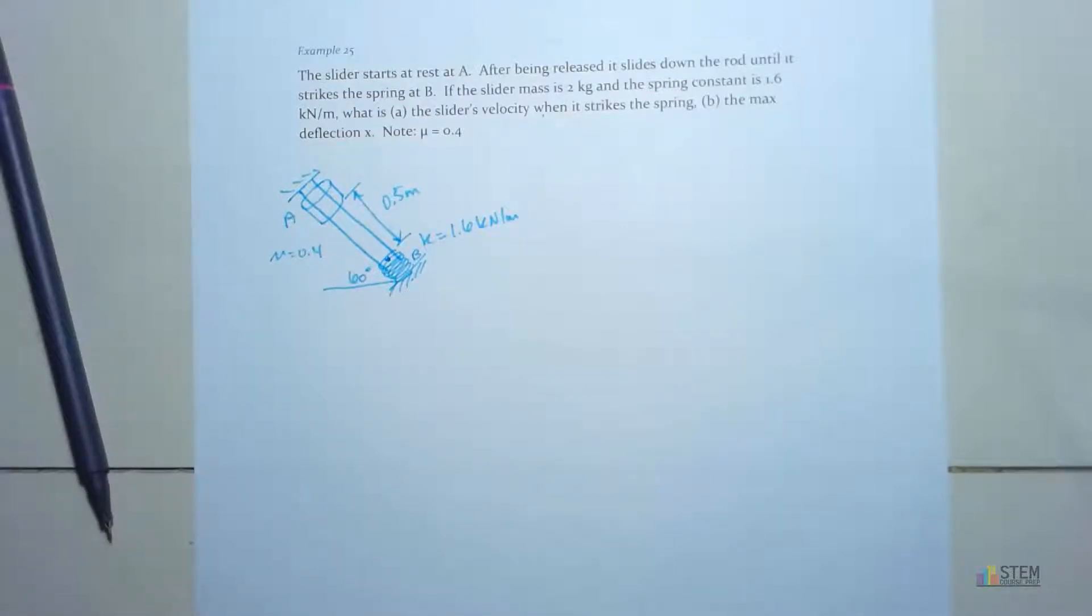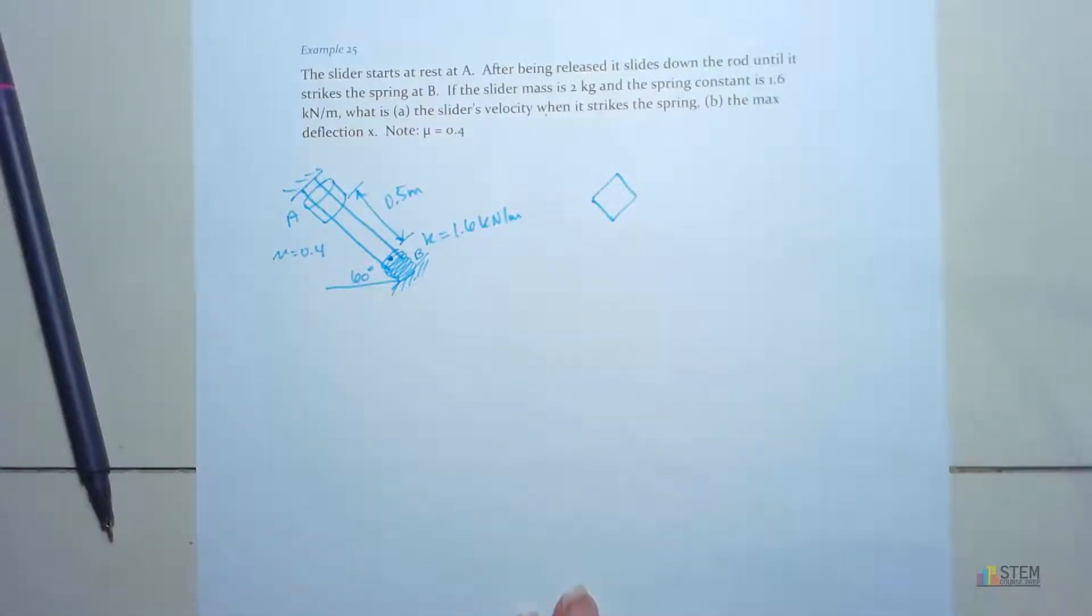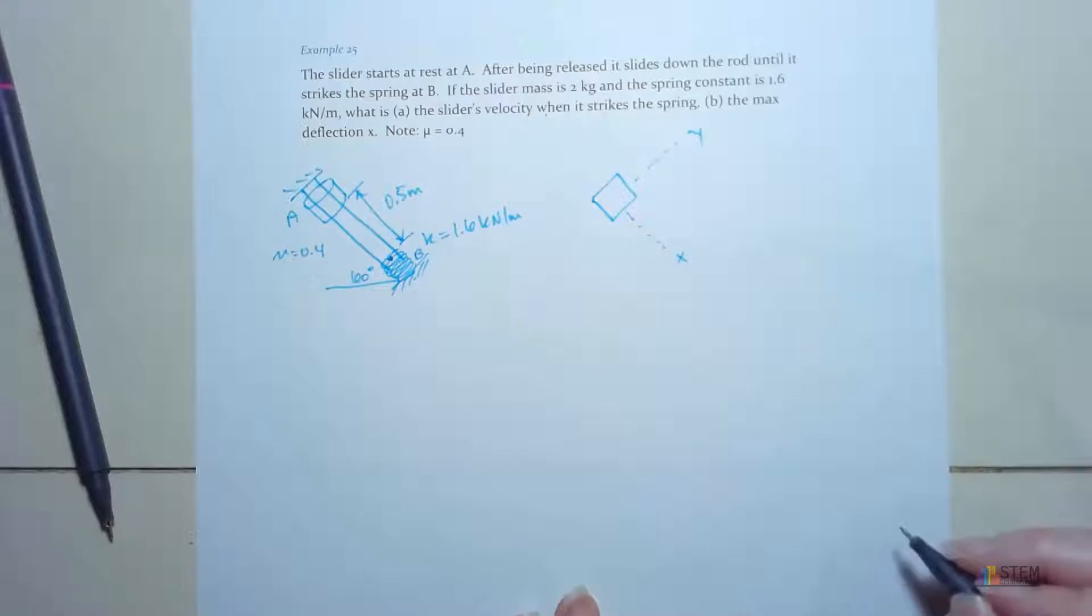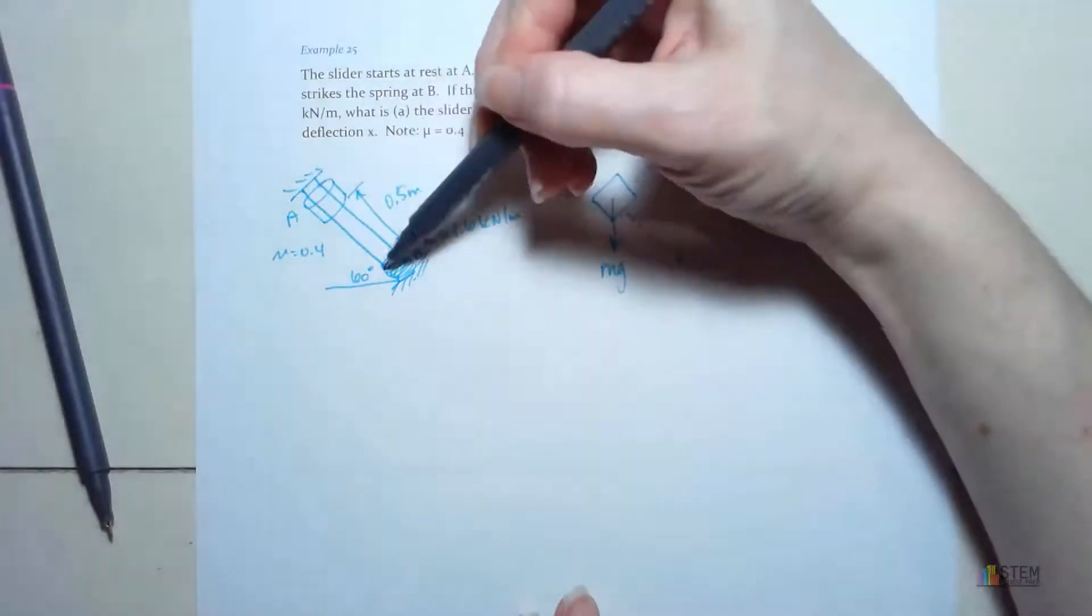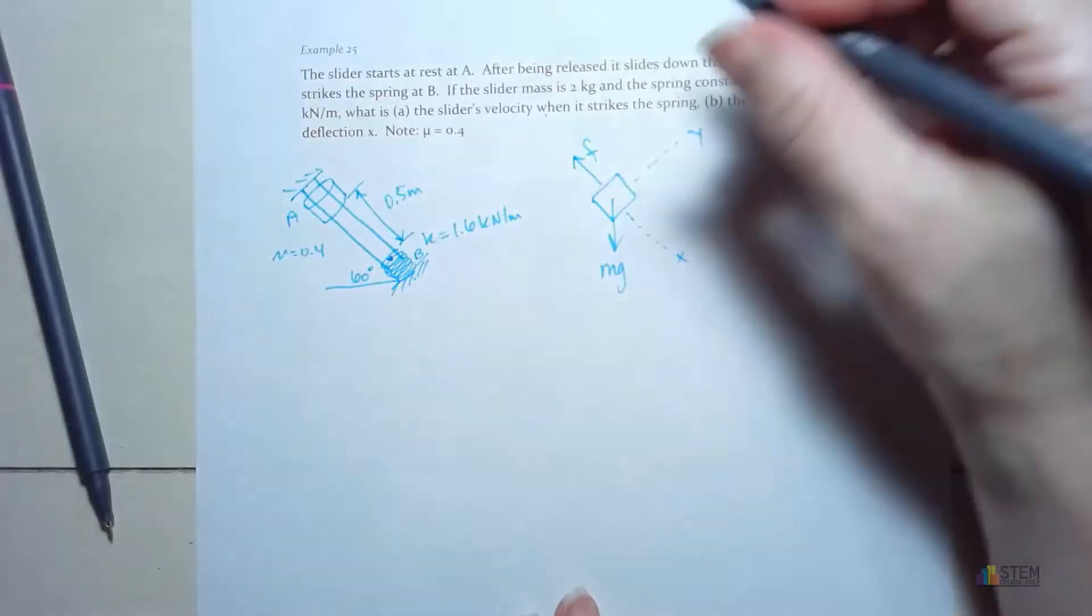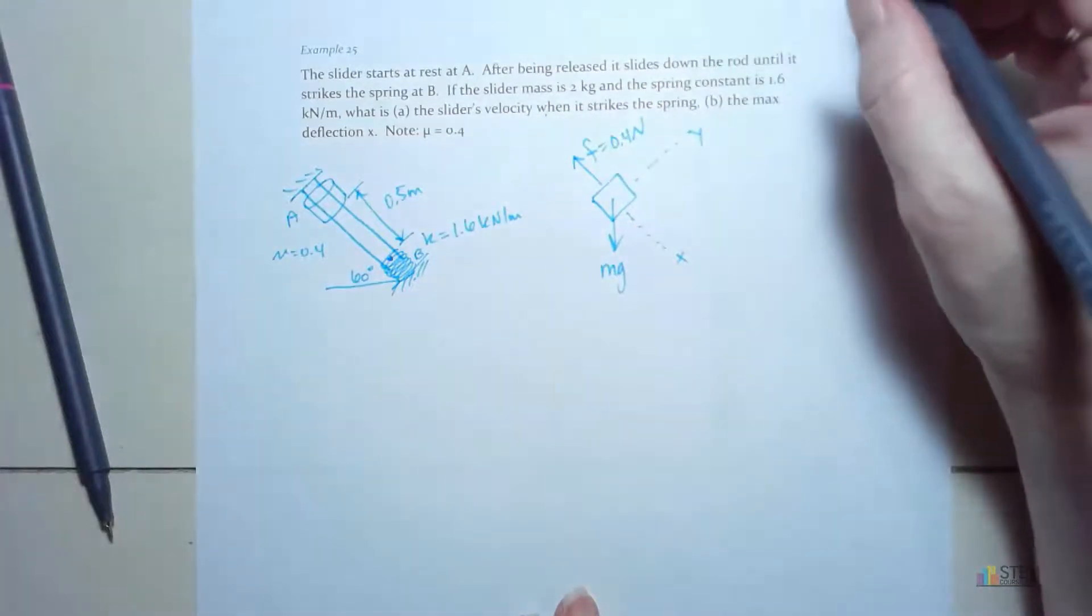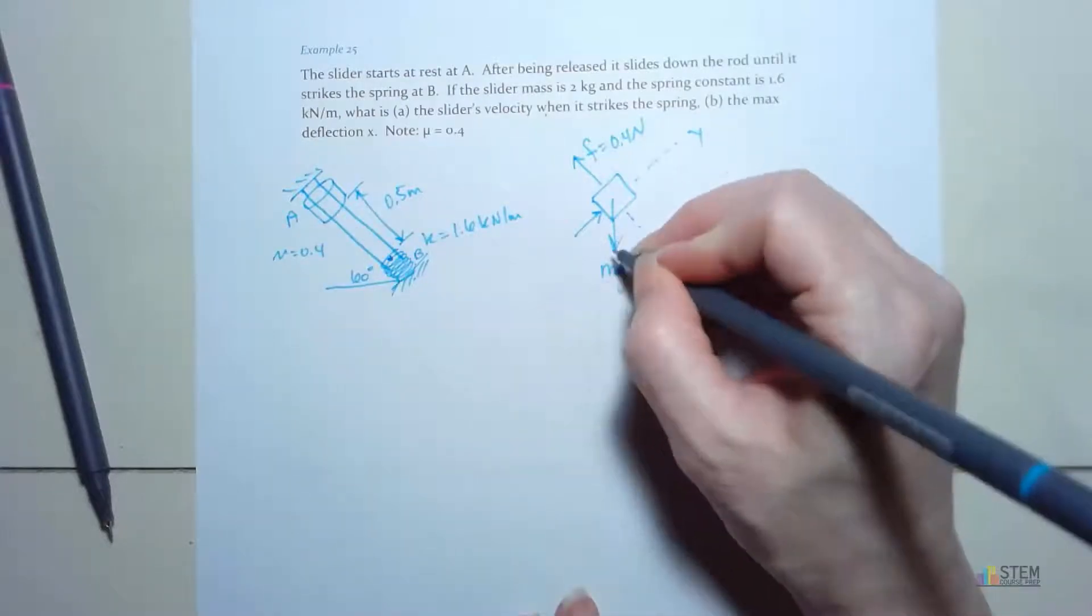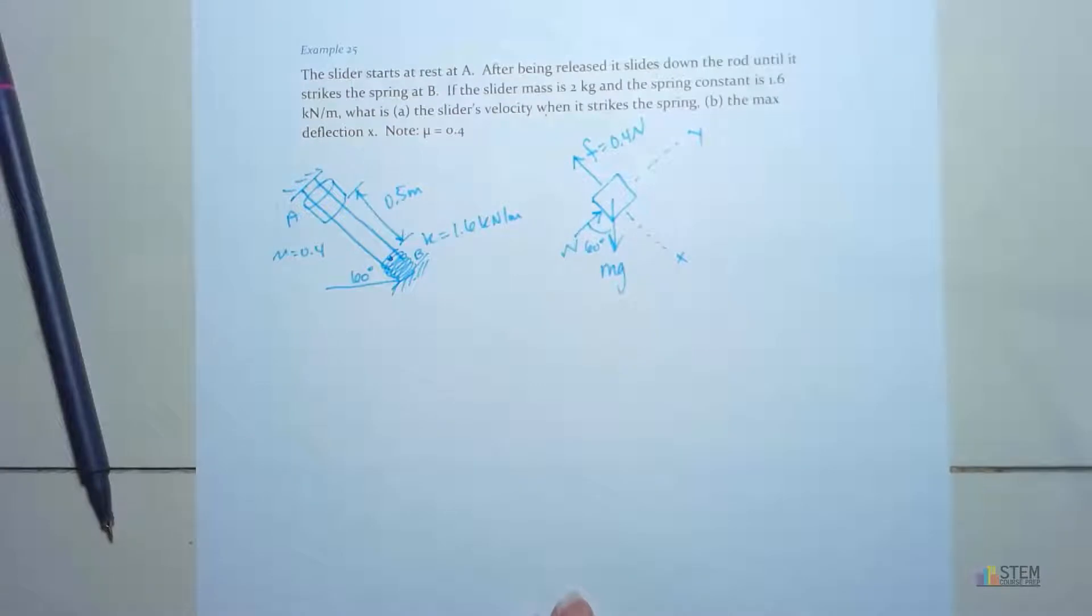Let's go ahead and get started. First things first, free body diagram every time. So there's the slider. Now again, always a good idea to label your coordinate system. So I'm going to say this is X, that's Y. Now our forces, we're going to have mass times gravity for weight. And I'm sliding down this rod, I already know I have friction. So if I'm going down this rod, I've got friction going up, and we know that is going to be the coefficient of friction times the normal force. So I've got 0.4 times N. And then the normal force, well just by gravity, this is going to kind of pull down, so the normal force is going to go up like that. So now we have this, and this angle is 60 degrees.